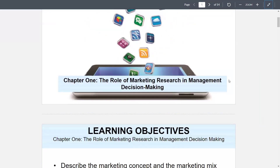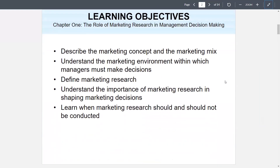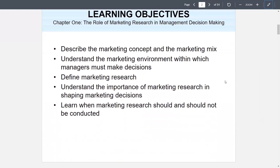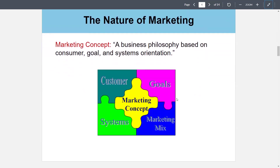Chapter 1: The Role of Marketing Research and Management Decision Making. Learning objectives: describe the marketing concept and the marketing mix; understand the marketing environment within which managers must make decisions; define marketing research; understand the importance of marketing research in shaping marketing decisions; learn when marketing research should and should not be conducted. Marketing is a process of planning and executing the conception, pricing, promotion, and distribution of ideas, goods, and services to create exchanges that satisfy individual and organizational objectives.